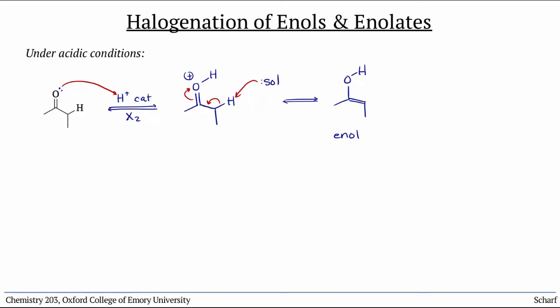In the presence of a dihalogen, the enol acts as a nucleophile, donating into the good acceptor orbital sigma-star-XX, reforming the CO double bond and making a new bond between the alpha carbon and the halogen.